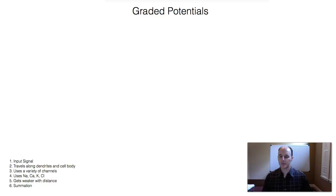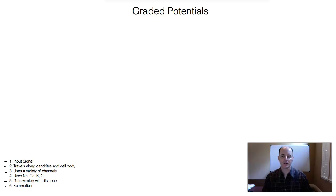When we talk about graded potentials, I want to focus on six aspects. On the bottom of the screen you can see: number one, input signaling; number two, travels along dendrites and cell bodies; number three, uses a variety of channels; number four, uses sodium, calcium, potassium, and chlorine; number five, gets weaker with distance; and number six, summation. These are all things that have differences when we compare graded potentials to action potentials.